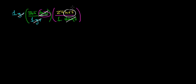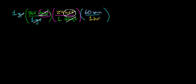Now we multiply by a conversion factor that takes us from units of hours over to units of minutes. One hour has 60 minutes, and notice that this unit of hour cancels out with the other unit of hour, leaving us with units of minutes.